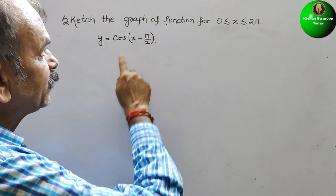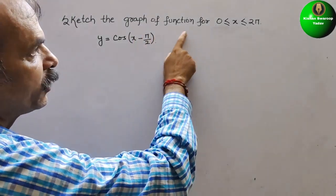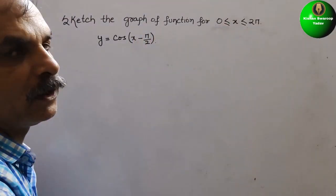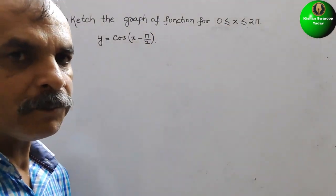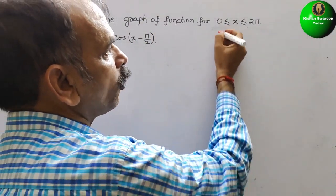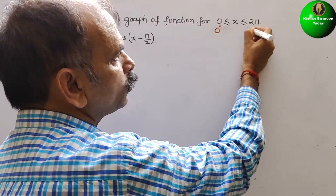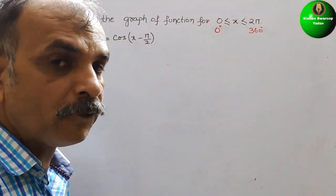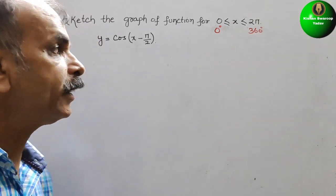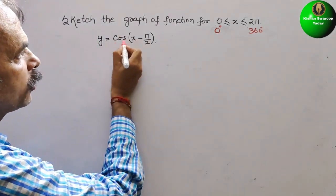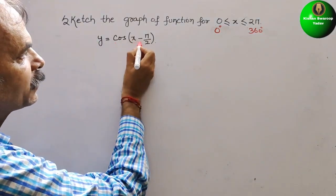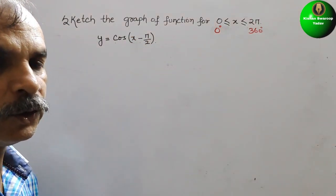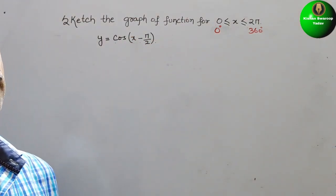The question is to sketch the graph of the function for 0 less than or equal to x less than or equal to 2π. That means we have to go from 0 degrees to 360 degrees. They have given y is equal to cos(x minus π/2).